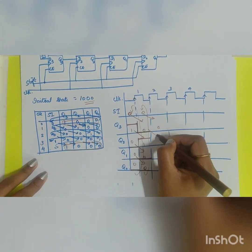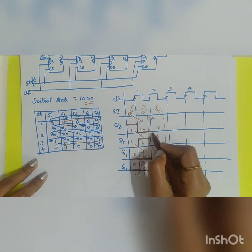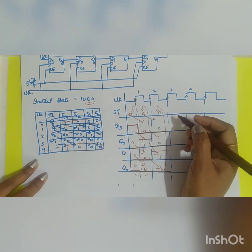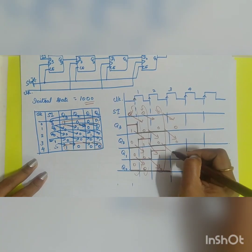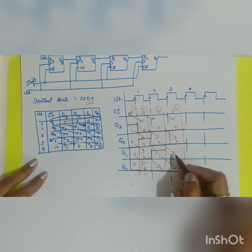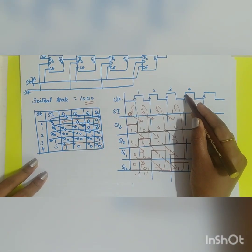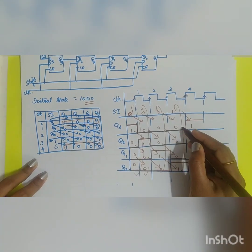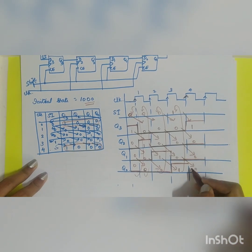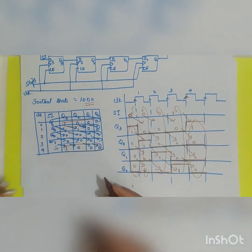During the second clock pulse: 0 shifts to Q3, 0 to Q2, 1 shifts to Q1 — it goes back to 1, Q0 remains 0. During the third clock pulse: 0 to Q3, 0 to Q2, 0 to Q1 — goes back to 0, and 1 shifts to Q0 — it returns to 1. During the fourth rising edge: 1 shifts to Q3 — it changes back to 1, 0 to Q2, 0 to Q1, 0 to Q0. The initial data 1 0 0 0 is obtained again at the fourth clock pulse.